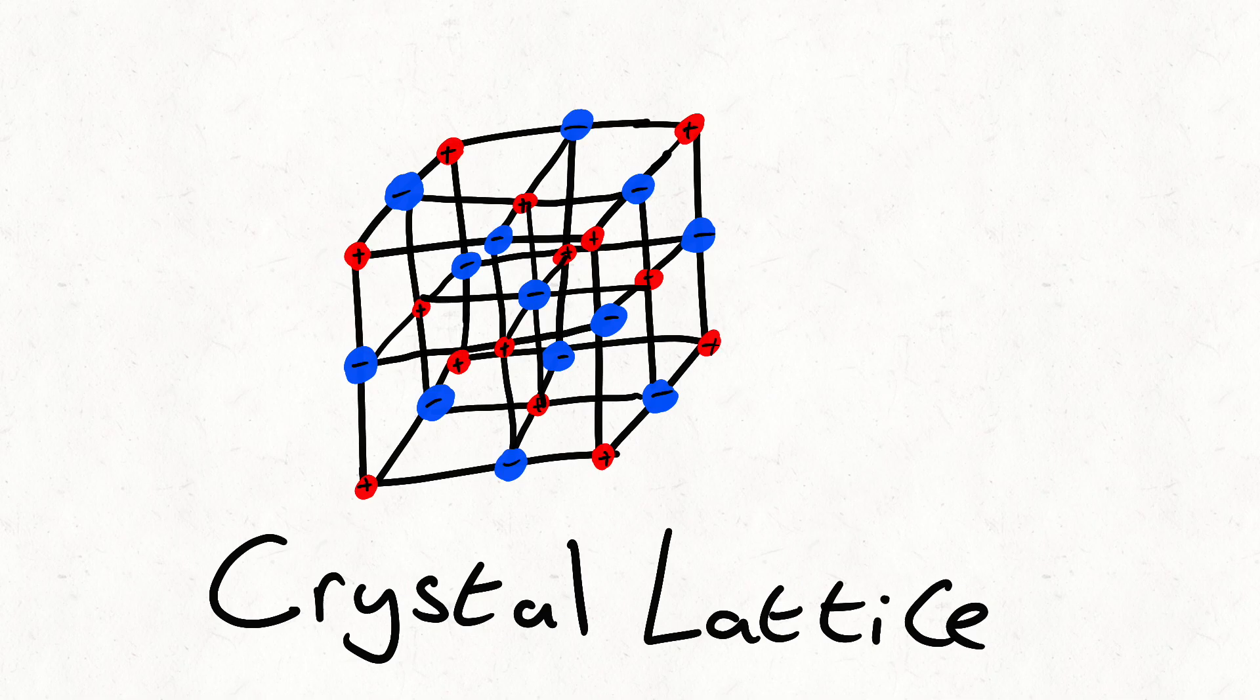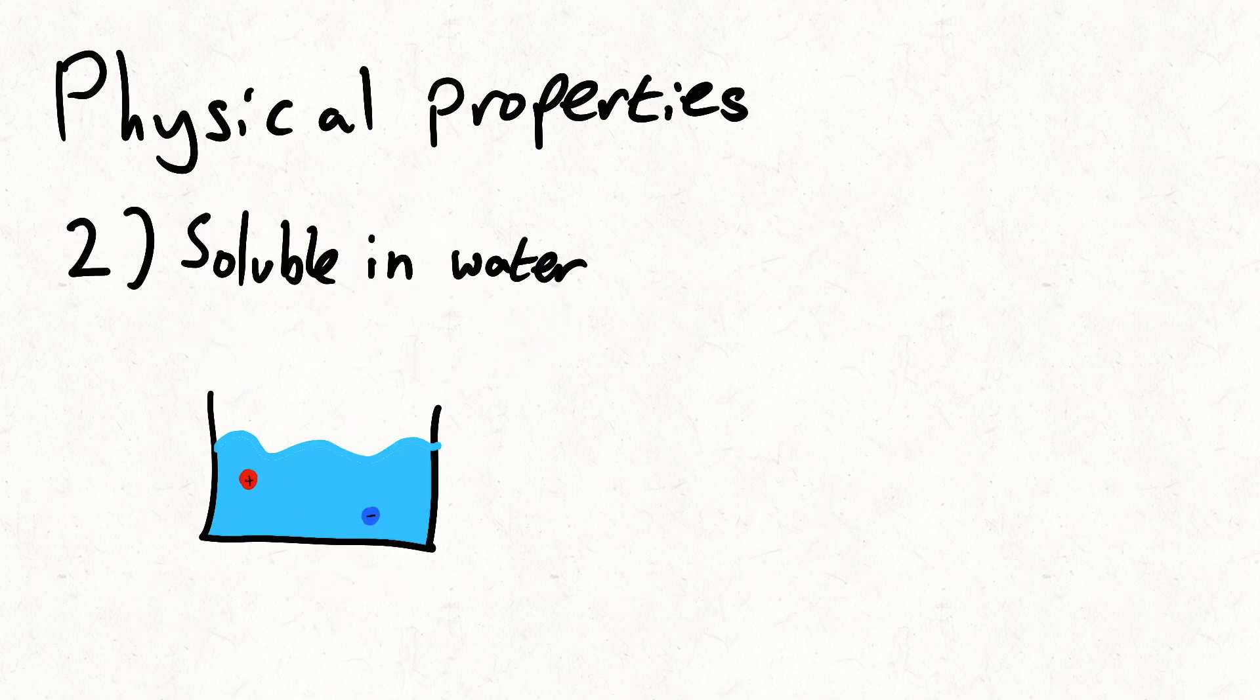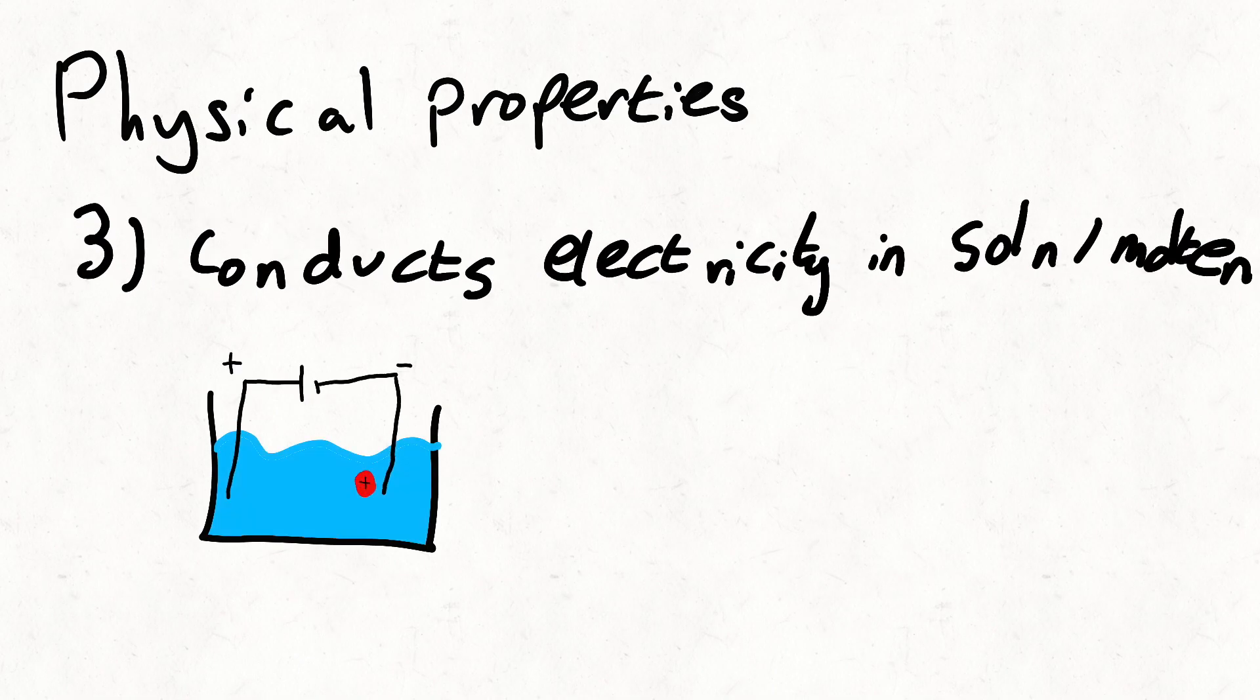This bonding causes ionic compounds to have a high melting point since a lot of energy is needed to break these strong ionic bonds. Ionic compounds are also soluble in water since they're charged, and these charges can move so they conduct electricity. They don't conduct electricity in solid form since the ions can't move.